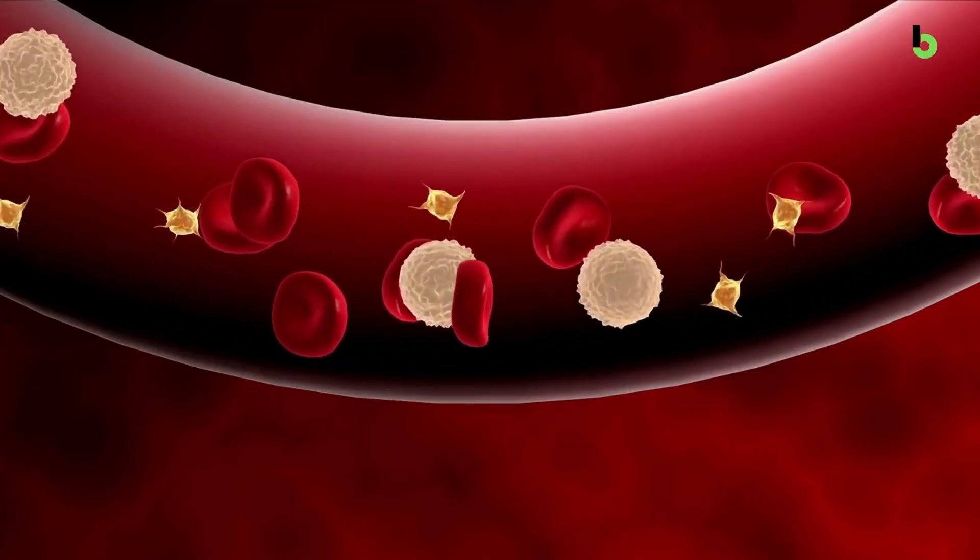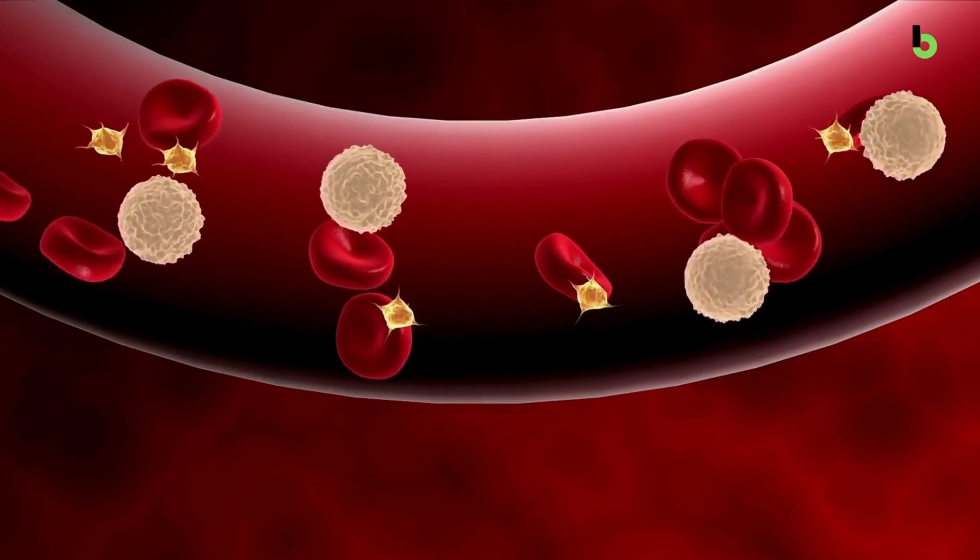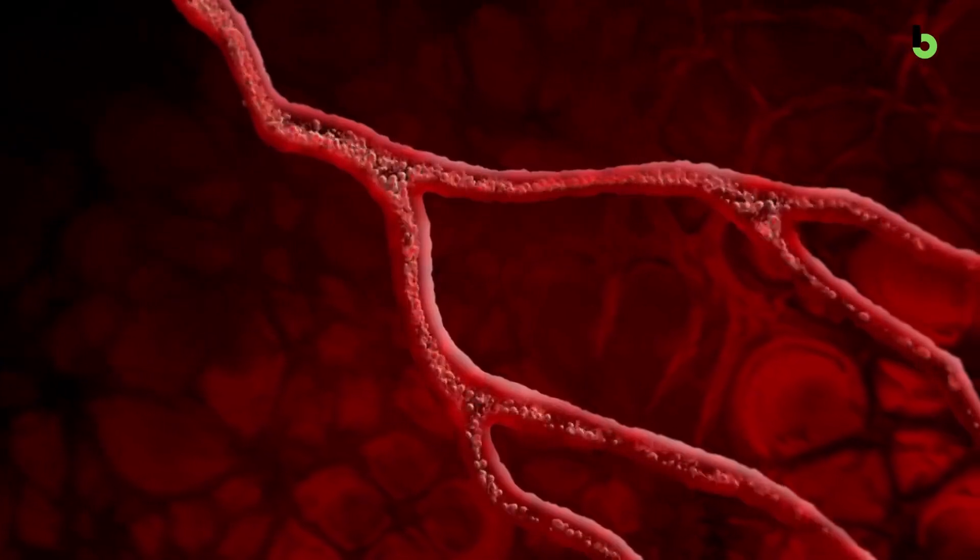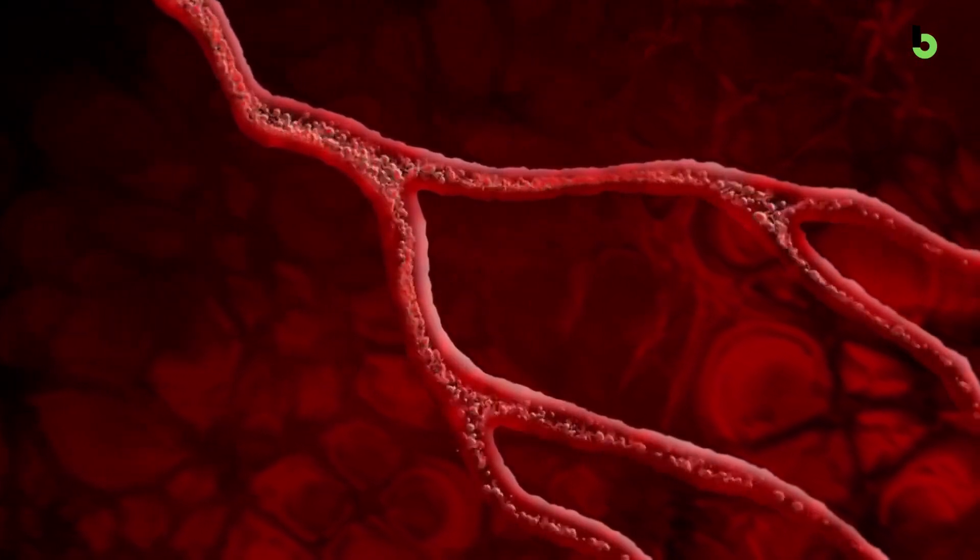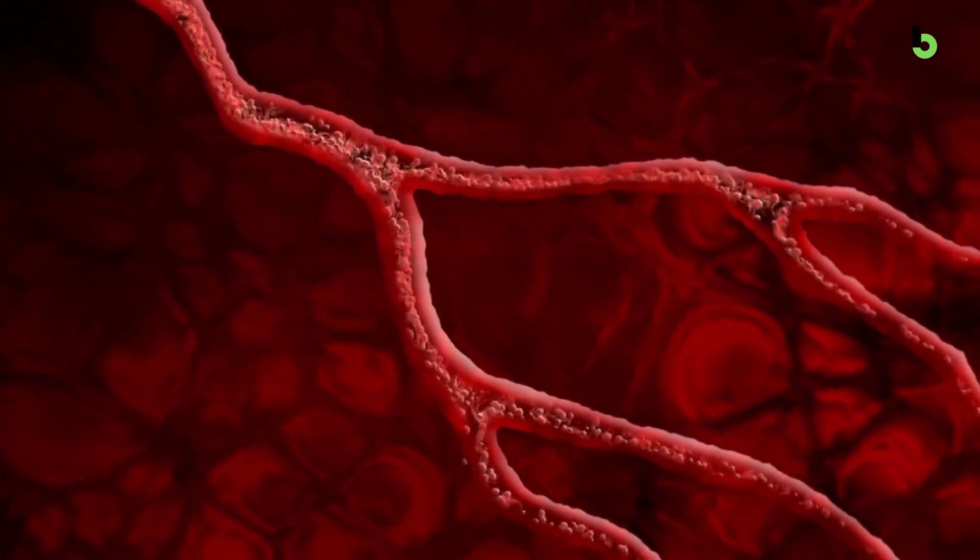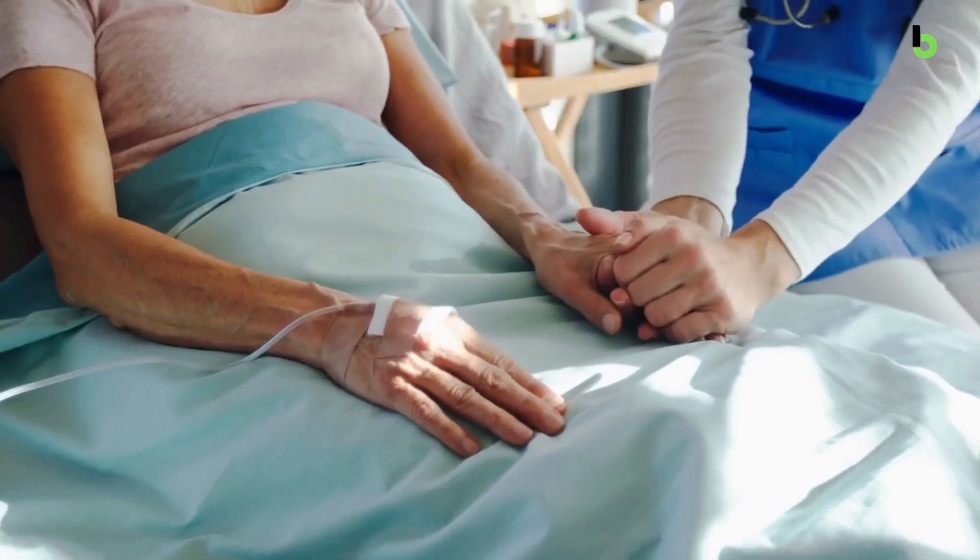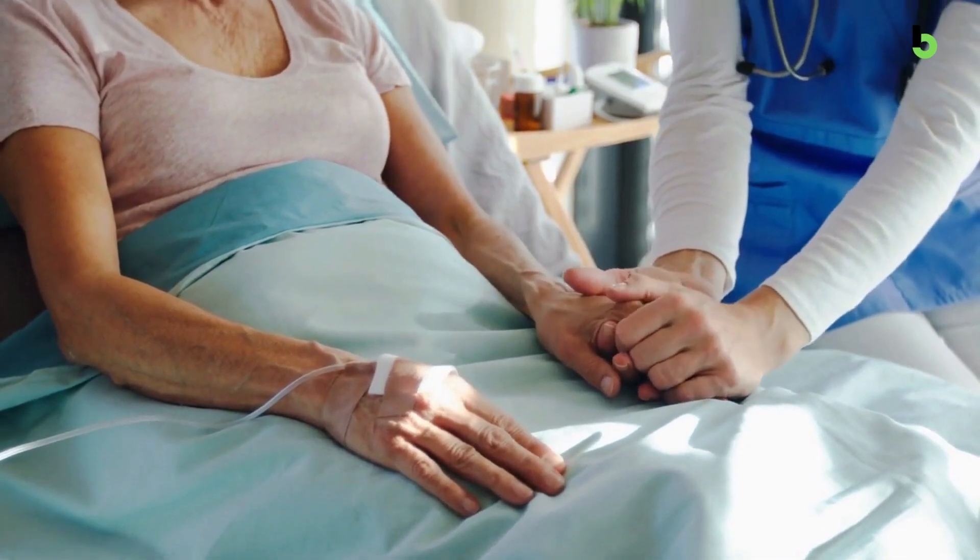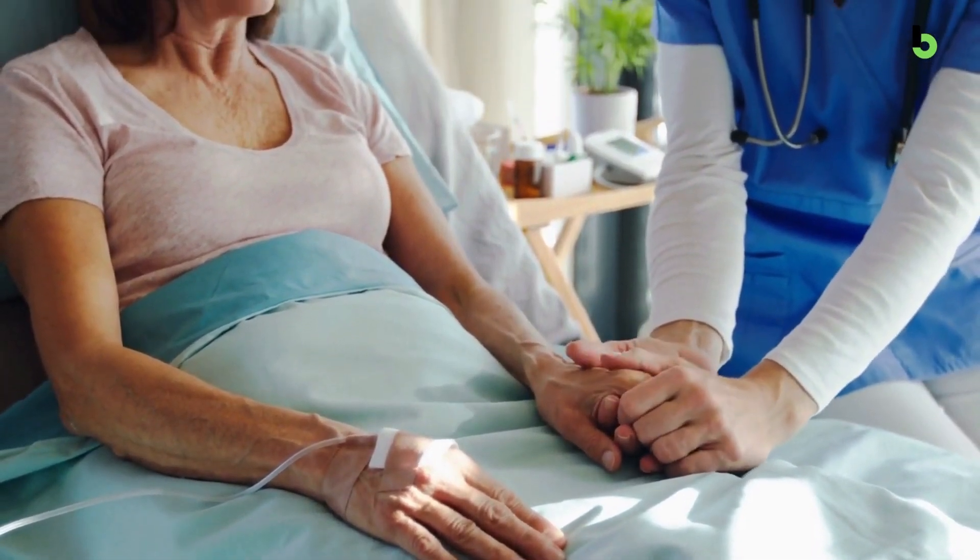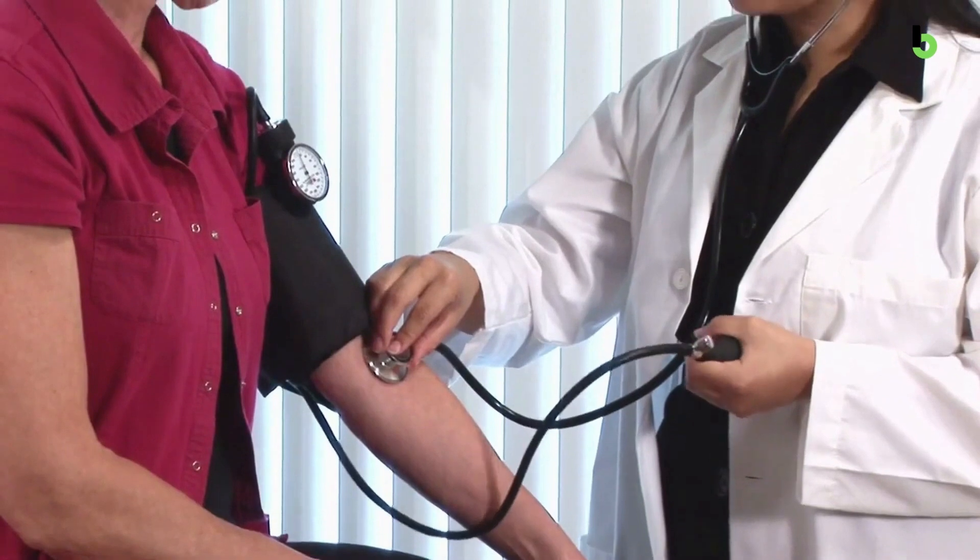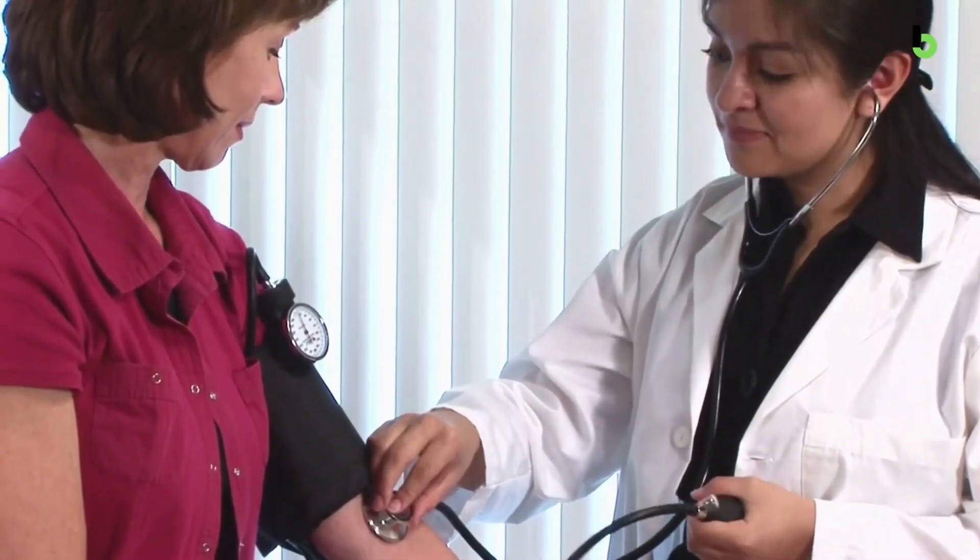High blood pressure can also cause proteinuria, which is the presence of protein in the urine. This occurs because high blood pressure can damage the tiny blood vessels in the kidneys, which can cause protein to leak into the urine. It can cause scarring and inflammation in the kidneys, which can lead to chronic kidney disease or even kidney failure. If you've been prescribed blood pressure medications it's important to take them as prescribed to keep your blood pressure levels down.